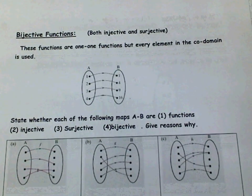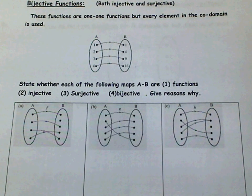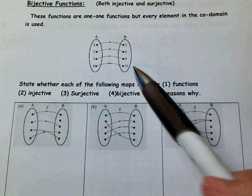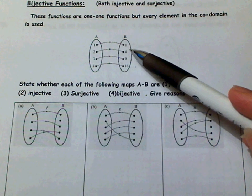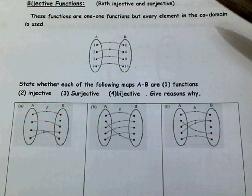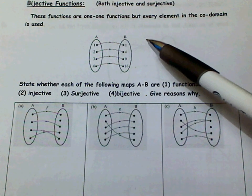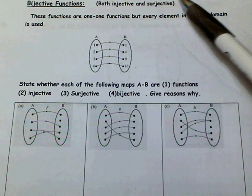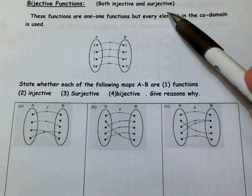Moving on to bijective functions. A bijective function is one which is both injective and surjective. These functions are one-to-one, but every element in the co-domain is also used. One of the conditions for a surjective function was every element in the co-domain used. So if asked to describe a function as bijective, look to see if it's both injective and surjective. It's also very important to make sure that the range is equal to the co-domain.